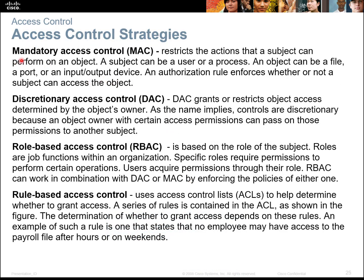For access controls, you have MACs — mandatory access controls — where you have to be who you are to do what you do. Discretionary access controls are granted based on the objective of the owner, so if you are part of a group, you can access it. RBACs are role-based access controls: if everybody is in accounting and somebody leaves, someone else in accounting can take over that role. And rule-based access controls block you from accessing resources if you don't have the required clearance.